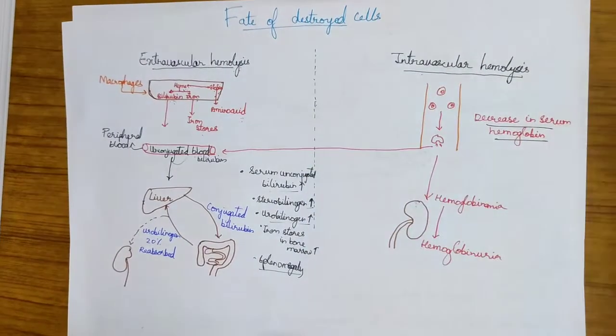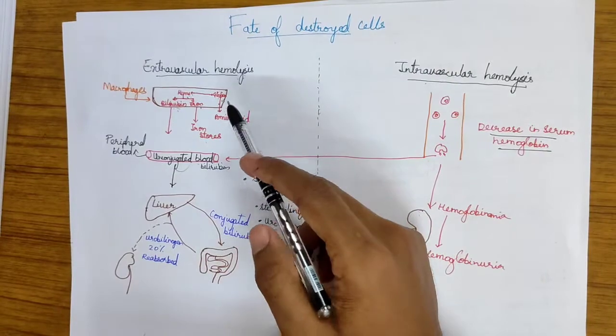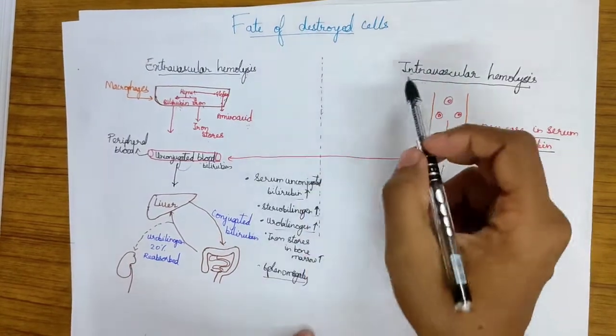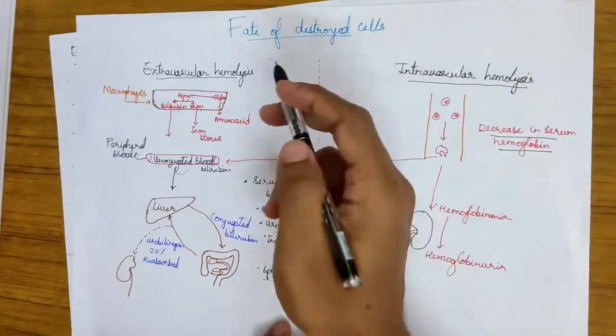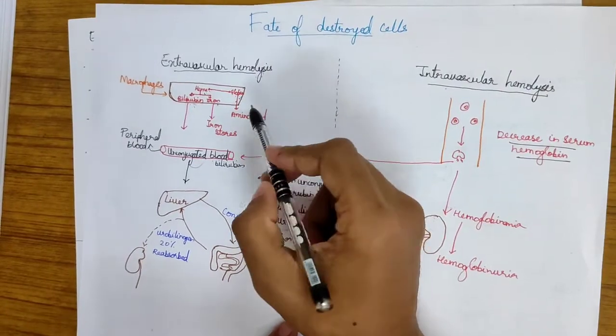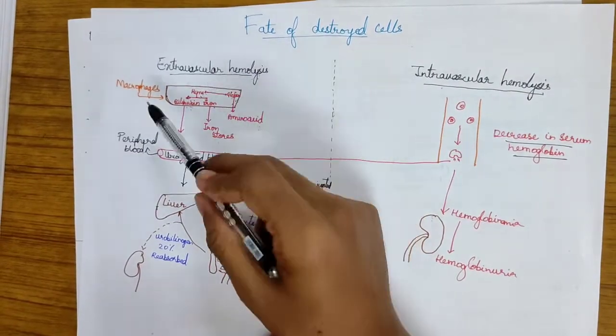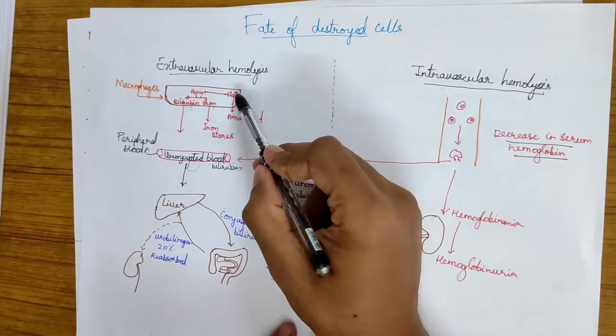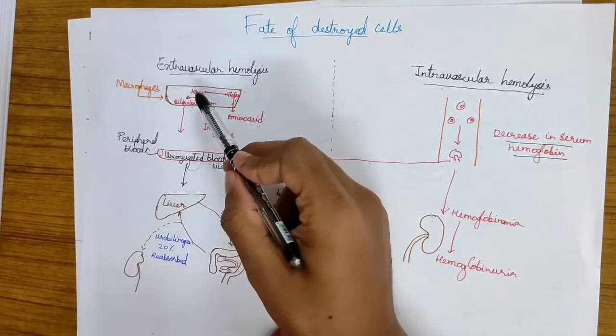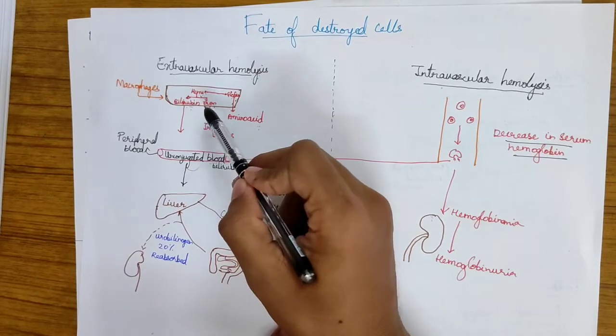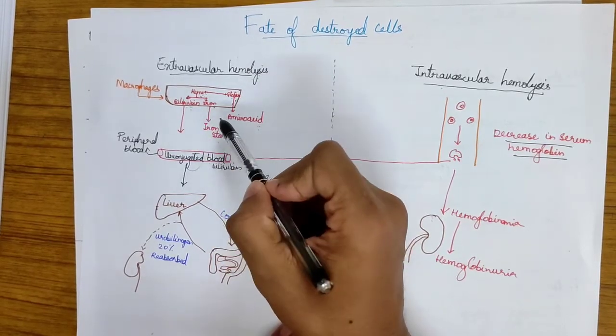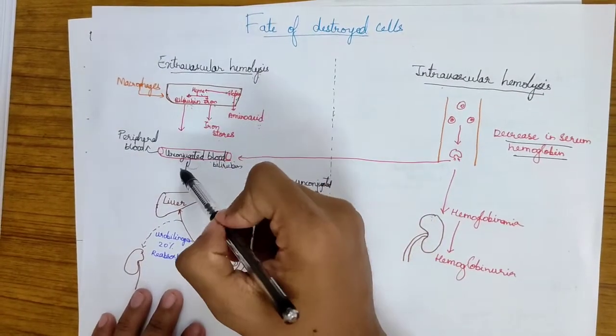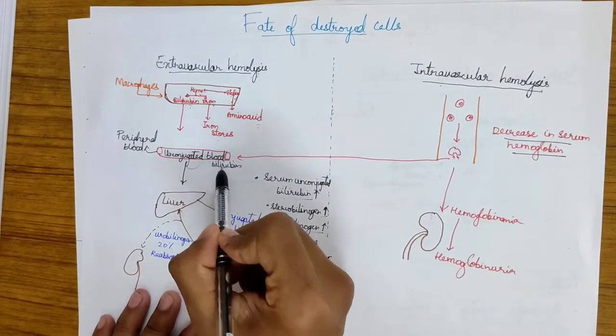Now let's talk about the fate of destroyed cells. It can also be divided into extravascular hemolysis and intravascular hemolysis. In extravascular hemolysis, when the RBCs are destroyed in the macrophages of liver and spleen, it divides into heme and globin. Globin goes to the amino acid pool, heme is further divided into bilirubin and iron. Iron goes to the iron stores in the body and bilirubin goes to the blood and becomes unconjugated bilirubin.